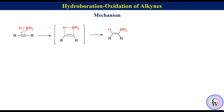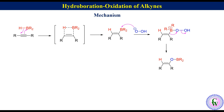The anion generated from the reaction of sodium hydroxide and hydrogen peroxide donates an electron pair to boron of alkenyl borane to produce an adduct, which undergoes alkyl group migration and hydrolysis to produce alkenyl borane and hydroxide ion.